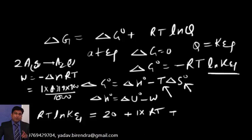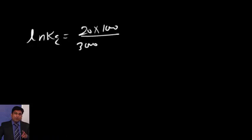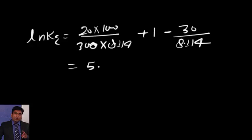So it becomes plus 30 into T. Now, when you substitute, ln K equilibrium becomes 20 into 1000 upon 300 into 8.314 plus 1 minus 36 upon 8.314. If you solve, this comes to 5.4, approximately 5.4, so the correct answer to our question is B.